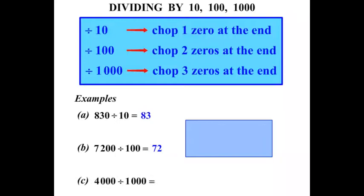4,000 divided by 1,000. Let's start with our 4,000. We're dividing by 1,000. So looking up at our little table there, we're going to chop three zeros off at the end. So those three zeros cross them out. So the answer of course is going to be 4. Hopefully that's fairly easy. Let's look at a few more.